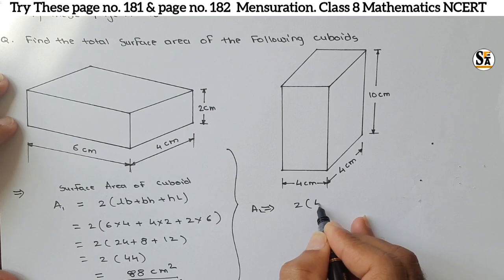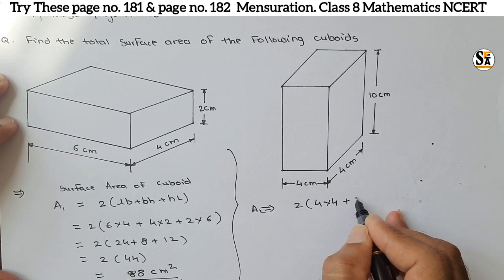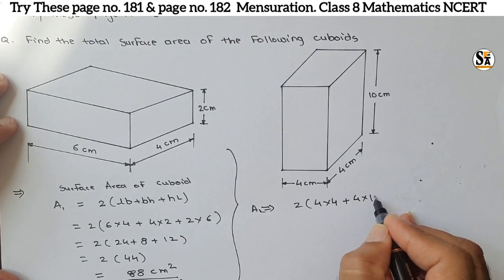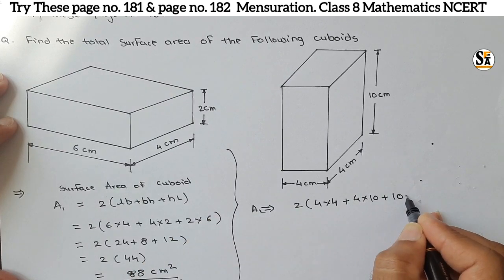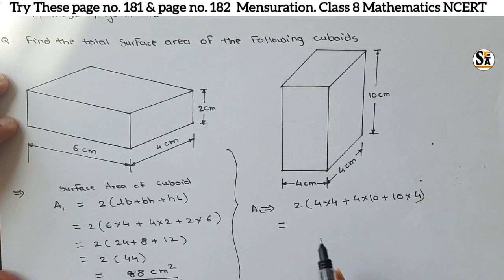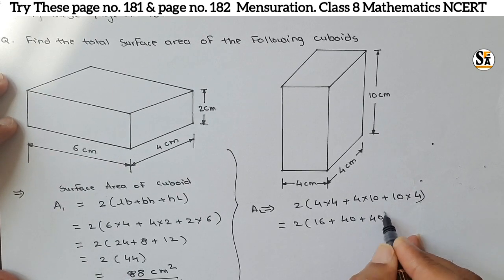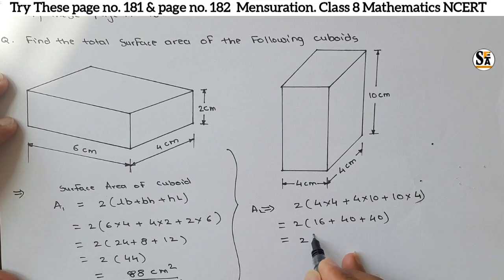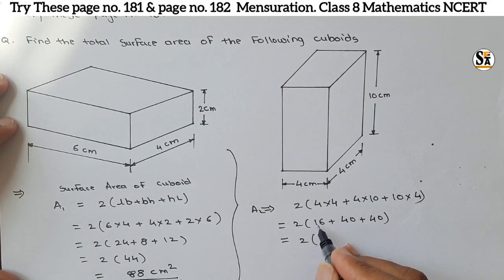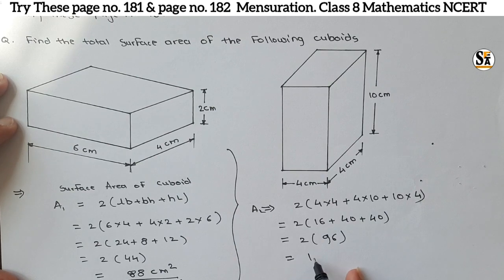For the second cuboid, l is 4 centimeters, b is 4 centimeters, and h is 10 centimeters. So: 2 into bracket (4×4) + (4×10) + (10×4) = 2 into bracket 16 plus 40 plus 40 = 2 into 96 = 192 centimeters square.